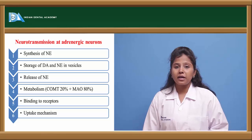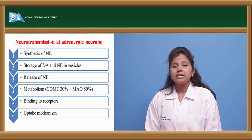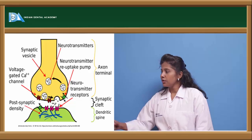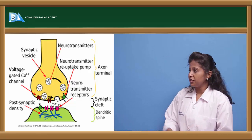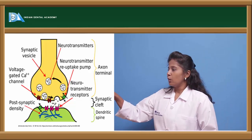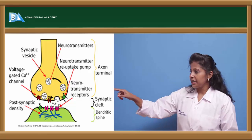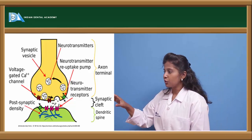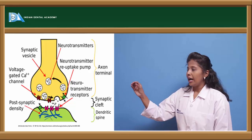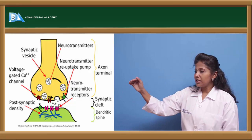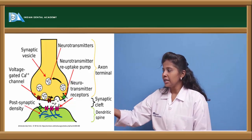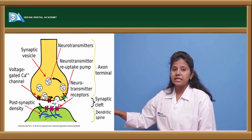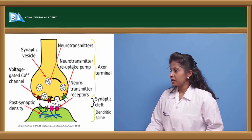Once metabolized, the neurotransmitter binds to receptors and exerts its actions. Whatever noradrenaline remains after exerting its actions undergoes re-uptake back into the system, and then again undergoes synthesis and metabolism — making this a cyclic process. The re-uptake mechanism is very important in the synthesis of noradrenaline. Here we can see the pictorial representation of synaptic vesicles where the neurotransmitter is stored, released, and binds to receptors to exert its actions.